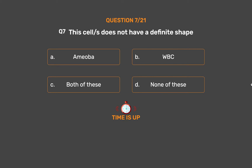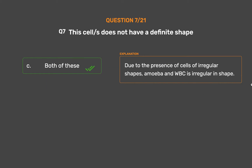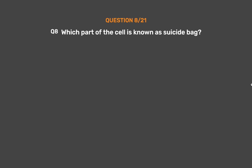The correct answer is Option C: Both of these. Due to the presence of cells of irregular shapes, Amoeba and WBC are irregular in shape.